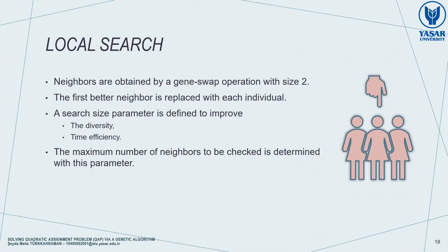Local search methods are frequently used with genetic algorithm models. In the local search, each individual in the current population is replaced with one of its better neighbors. In RGA, we used the variable neighborhood search (VNS) with a modification. We obtained neighbors by a gene swap operation with size 2, like in mutation, and the first better neighbor is replaced with each individual. We defined a search size parameter to improve diversity and time efficiency, determining the maximum number of neighbors to be checked.